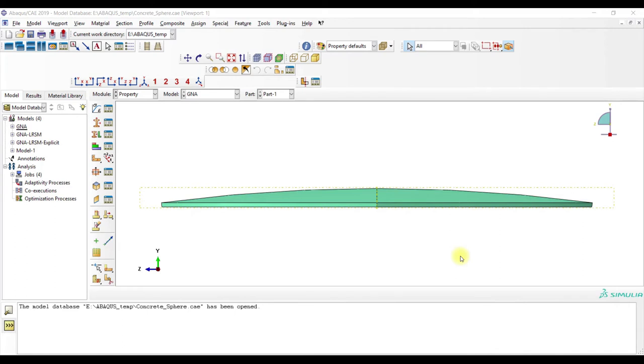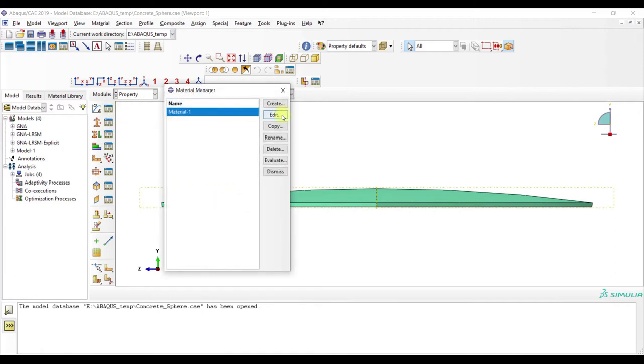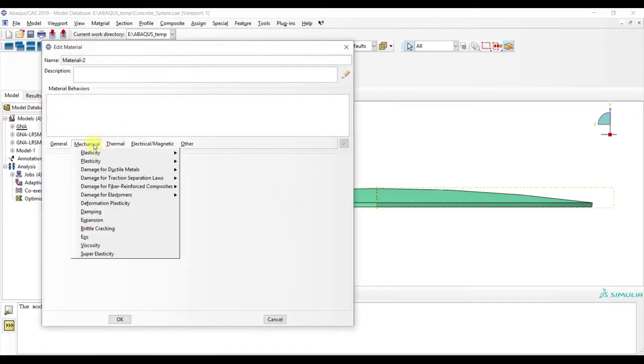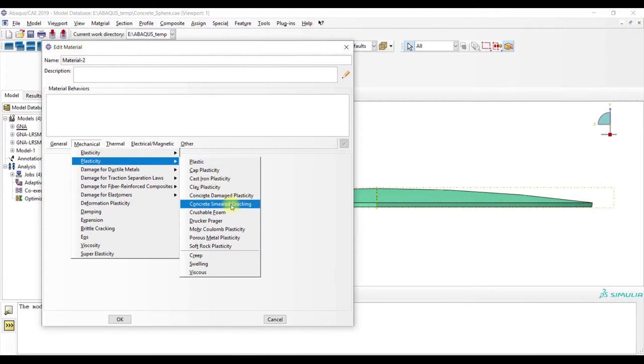In this video, we will take a look at the Concrete Damage Plasticity Material model. We can find it in the Abaqus CAE user interface in the Property module, then go to Material Manager, Create, Mechanical Plasticity, and then we have here Concrete Damage Plasticity.